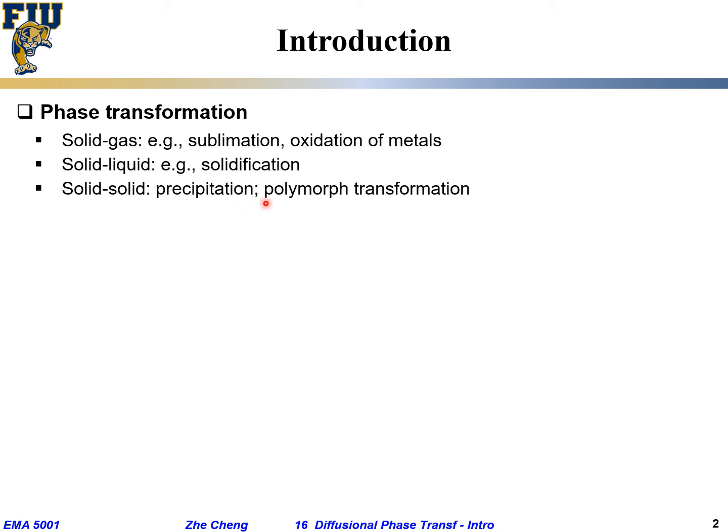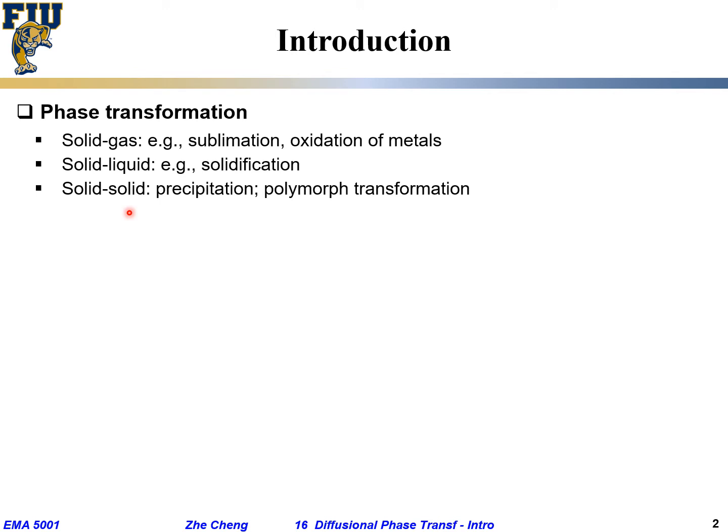There is also polymorphic transformation — for example, the transformation between alpha iron and gamma iron, between the BCC iron and the FCC iron. These are all different examples of solid-solid phase transformation, which will be the focus for this part of the lecture.